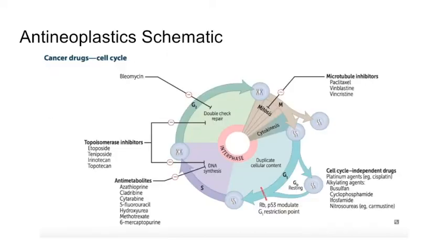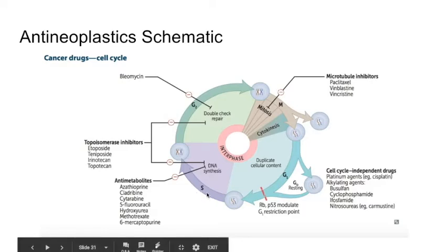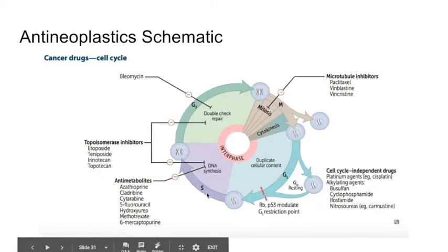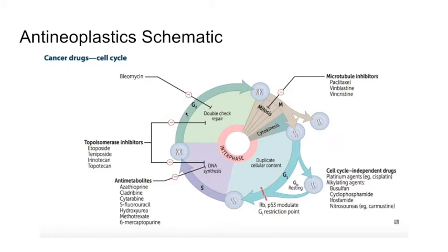As we all know, there are cycles for the cell. You start with the G1 phase where you duplicate the cellular content. Then the S phase where you make DNA. Then the G2 phase where you double-check and repair the DNA you've made. And finally the M phase — mitosis — where you divide the cell.